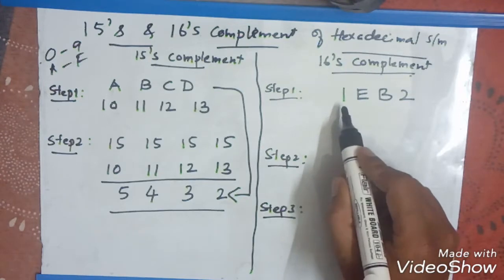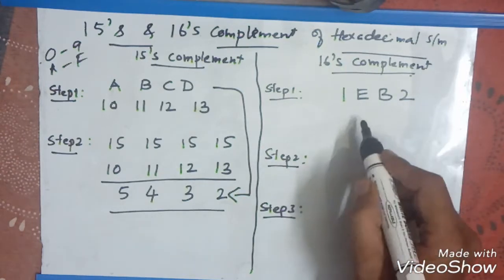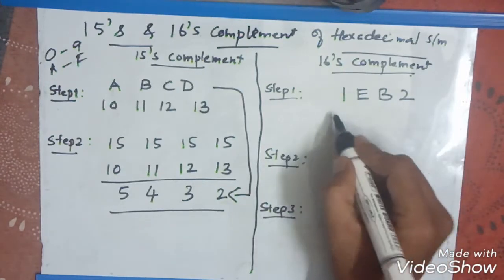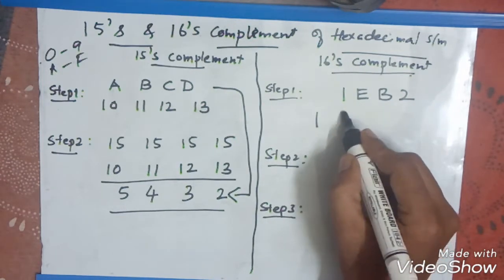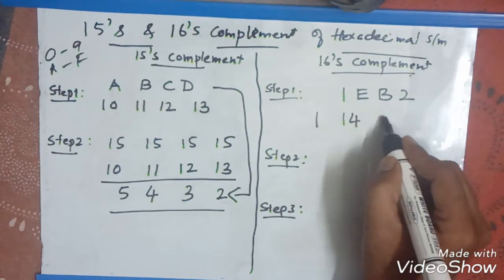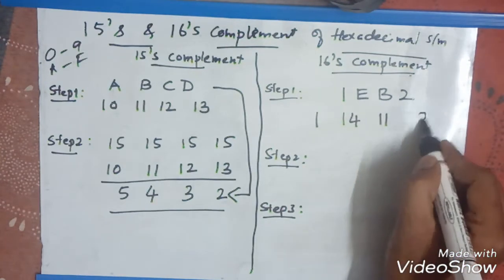We have a number that is 1, e, b, 2. Then, convert it into the simpler number. 1 is 1. As it is, we have. Then, e is what? E is 14. Then, b is what? 11. Then, 2 is as it is.